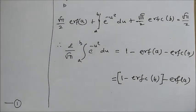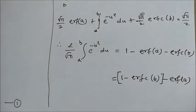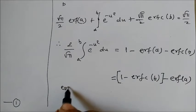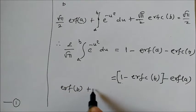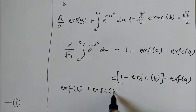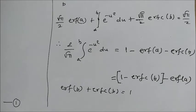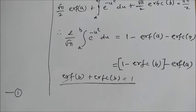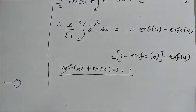Now we know the property of error function which says that erf of b plus erfc of b is equal to 1. This is the property of error function. So what is 1 minus erfc of b? It is erf of b.